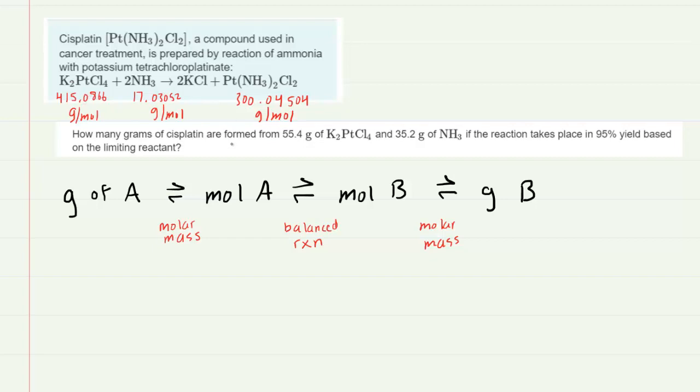Next we want to determine how many grams of cisplatin we can form based on both this amount of reactant as well as on the other amount of reactant. We're going to make two calculation strings and follow the roadmap listed below. We're going to convert the grams of the first reactant into moles, then convert the moles into moles of product, and then into grams of product.